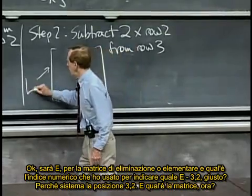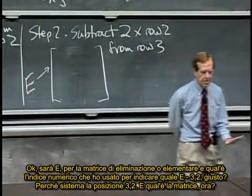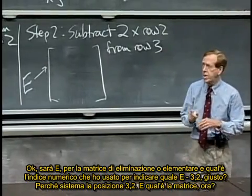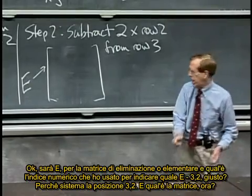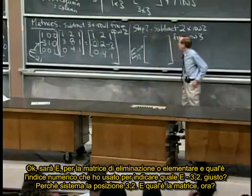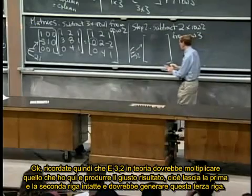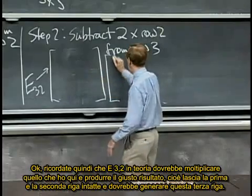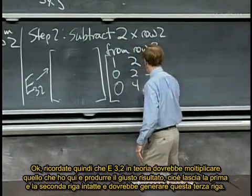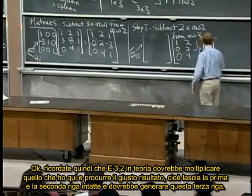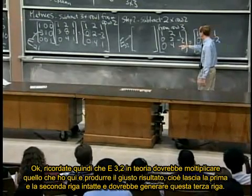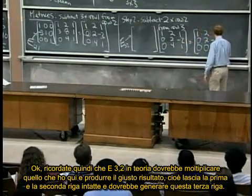It's going to be E, for elementary or elimination matrix, and the index number — E three two — because it's fixing the three-two position. E three two is supposed to multiply our matrix and produce the right result: it's supposed to leave the first row, leave the second row, and straighten out the third row.